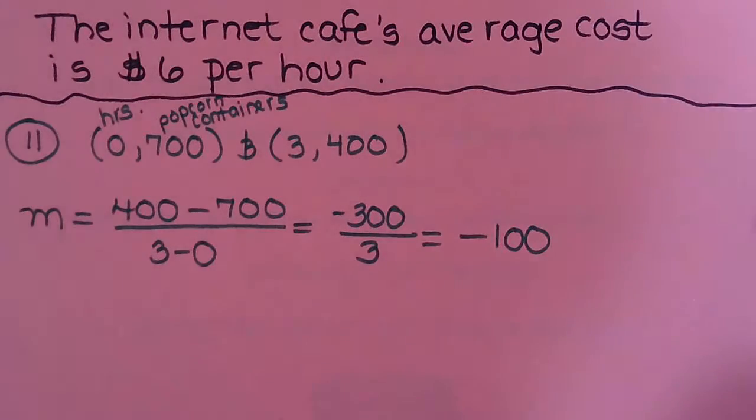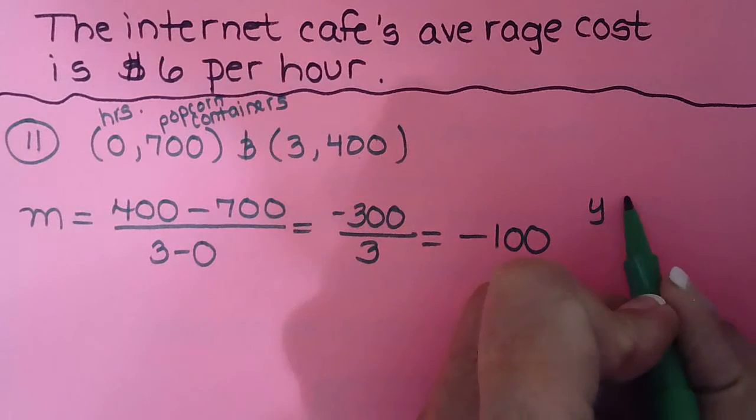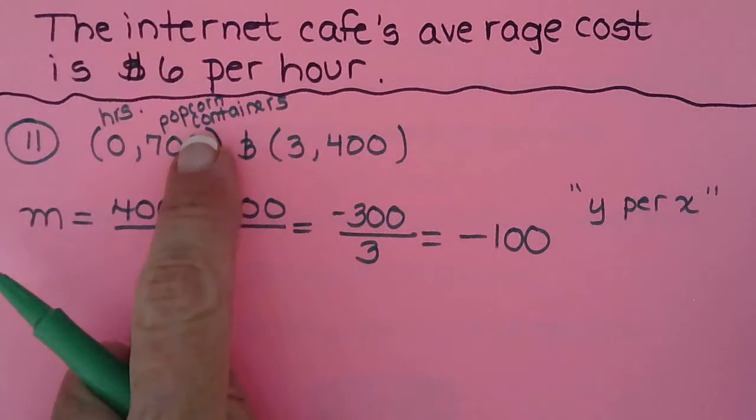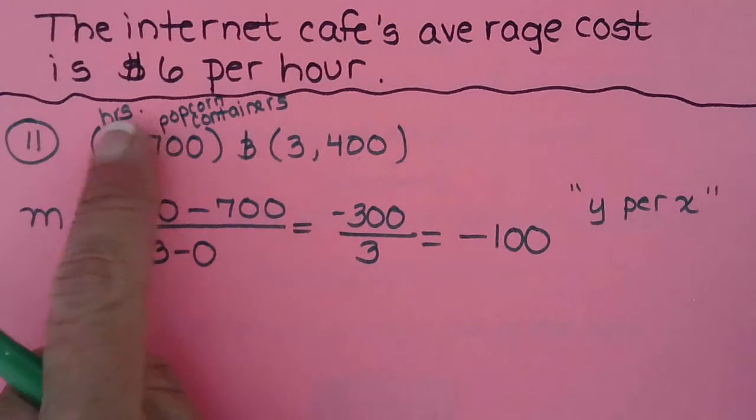And then the second thing, remember, we're supposed to do is label that. So I always put my y per x here, get it all labeled. So popcorn containers per hour.